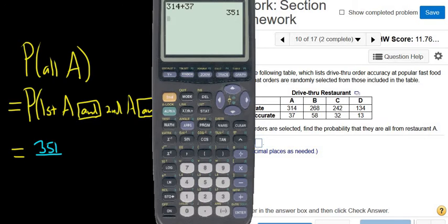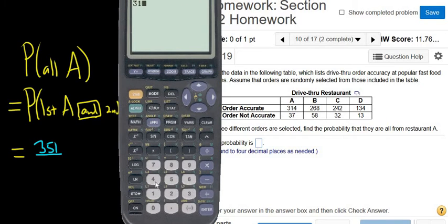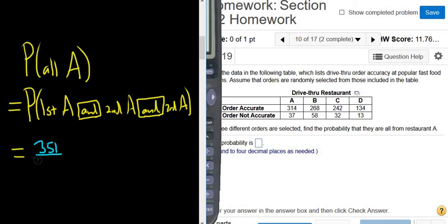Now we have to figure out how many ways can we pick an order. So to do that we have to add up all of these numbers. So let's do that. This would be 314 plus 37 plus 268 plus 58 plus 242 plus 32 plus 134 plus 13. So 1098. So there are 1098 ways to pick an order.